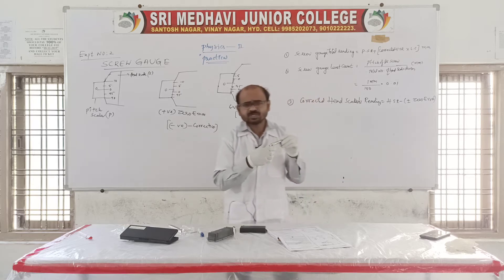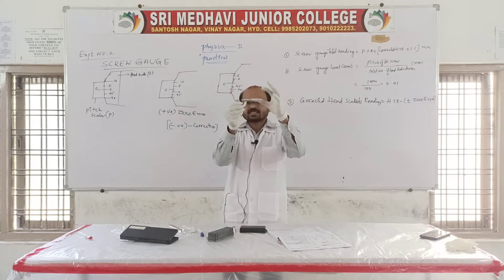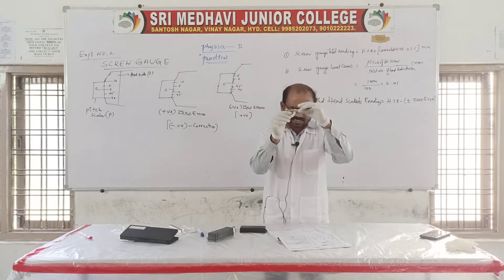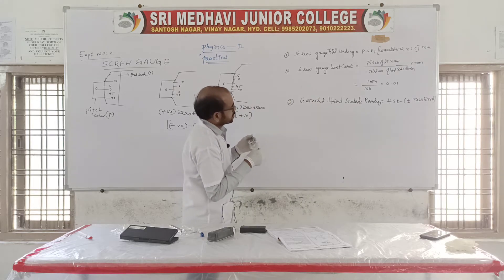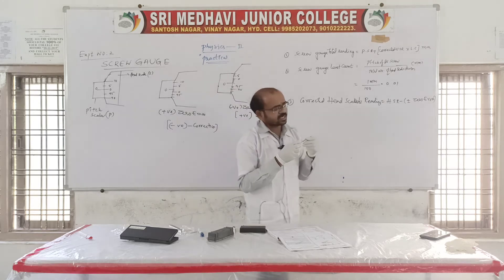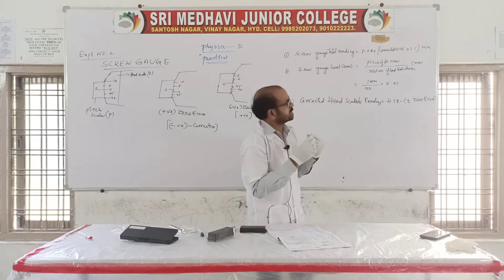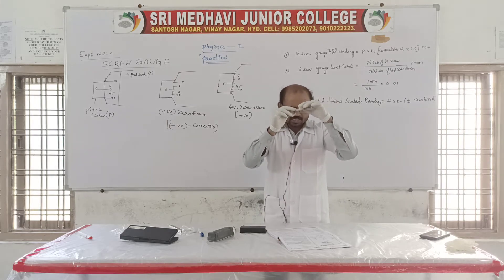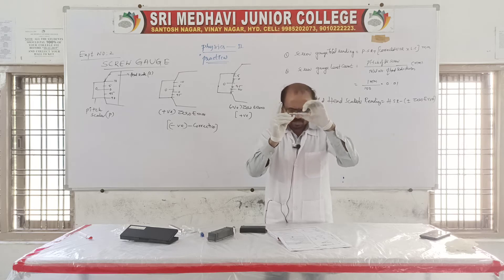The other scale is the pitch scale. The head scale is the one that freely rotates. Inside there is a scale called the pitch scale. The pitch scale has divisions like 0, 5, 10, and so on in millimeters, where each division carries one millimeter. The head scale moves freely on the pitch scale.